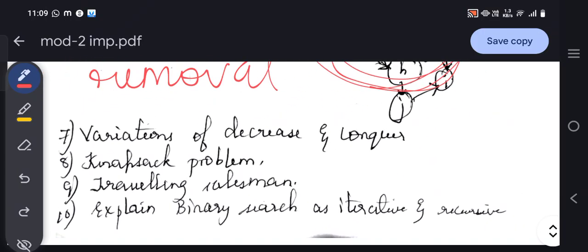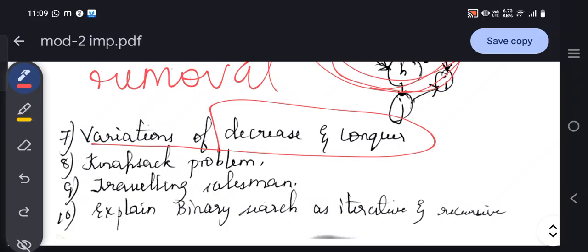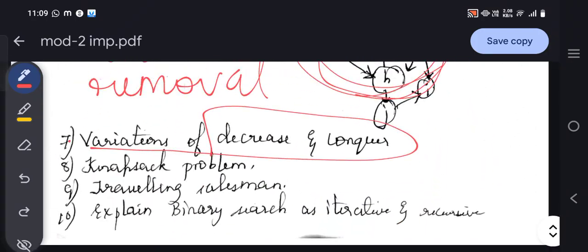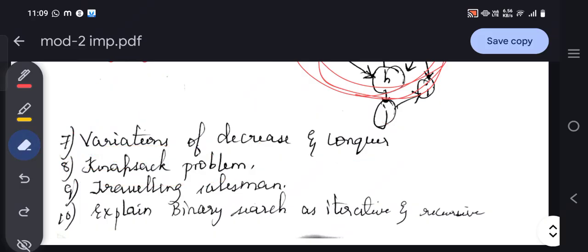Then coming to the seventh one: very few questions. Variations of decrease and conquer—that is what we had learned. Previously we were discussing about divide and conquer, then comes decrease and conquer. You have to just know the variations. No need of learning any extra algorithms. Then the knapsack problem.